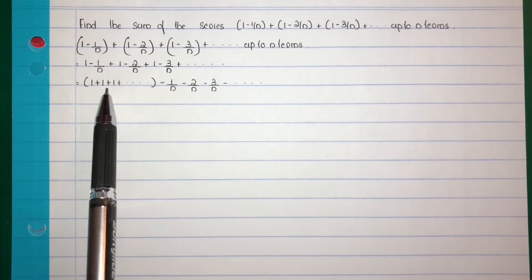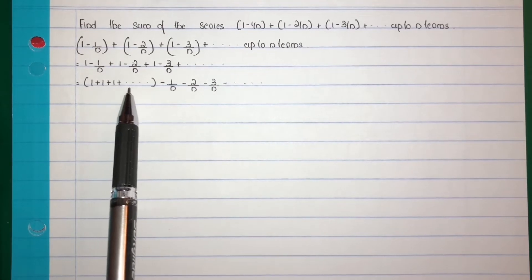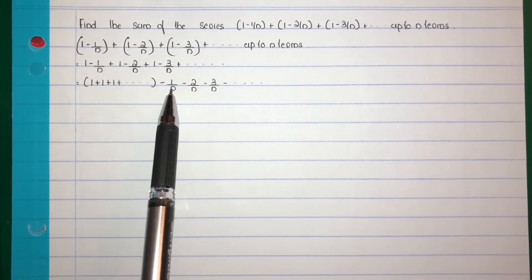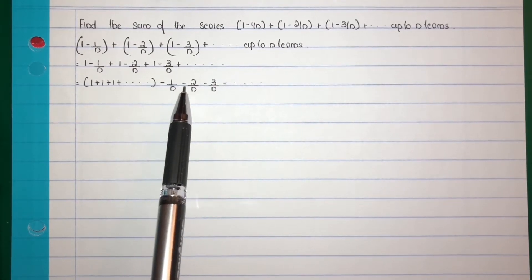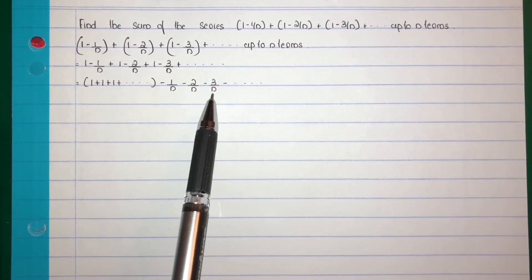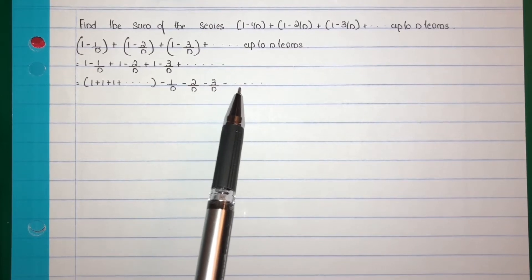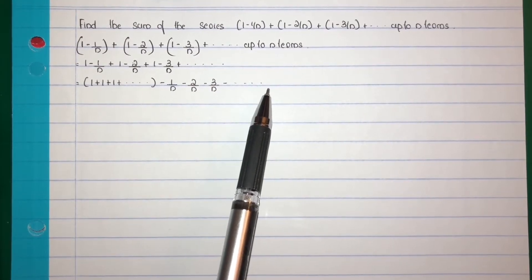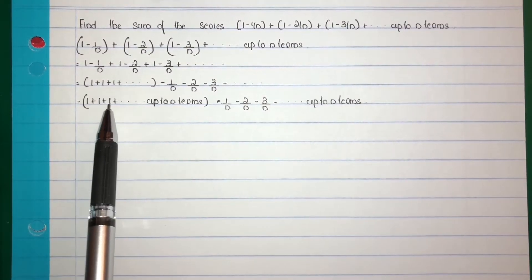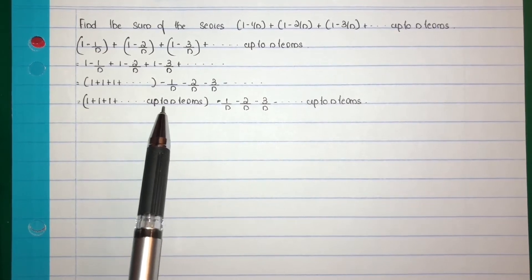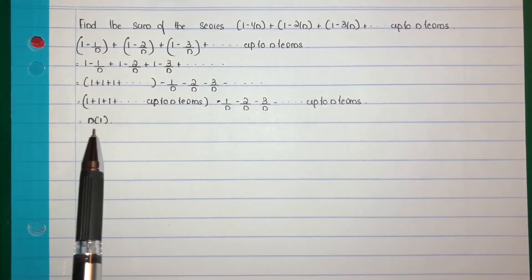That is: 1 plus 1 plus 1 plus etc. up to n terms, minus 1/n minus 2/n minus 3/n etc. up to n terms. Now, 1 plus 1 plus 1 plus etc. up to n terms equals n into 1, that is n.